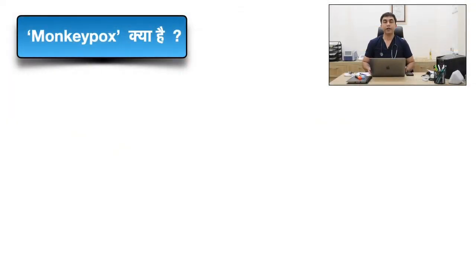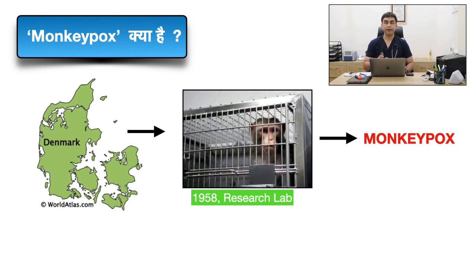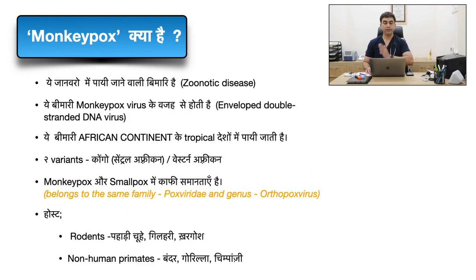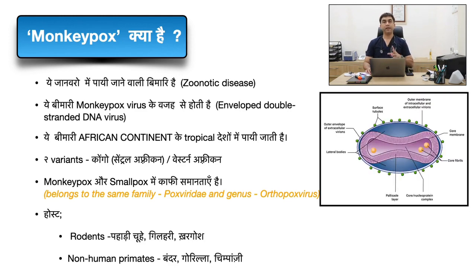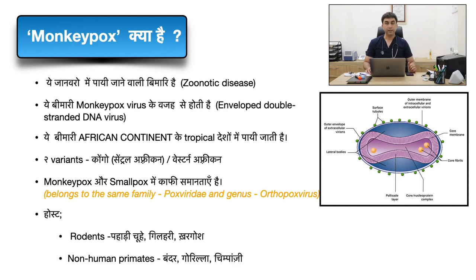Monkeypox was first discovered in 1958 in a research lab in Denmark, a northern European country. It is actually a zoonotic disease. The virus is a DNA double-stranded virus found in an envelope. There are two variants: the Central African variant — also known as the Congo variant — and the Western African variant. The Congo variant is responsible for the current outbreak and is more virulent and transmissible. Monkeypox virus and smallpox virus share many similarities as both belong to the same genus and family, which is why there is common cross-protection between their vaccines.